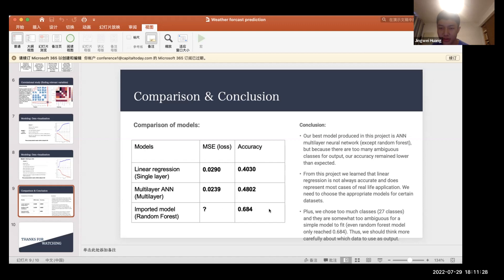In conclusion, our best model produced in this project is the artificial neural network, except the Random Forest one. Maybe because there are too many ambiguous classes for output, our accuracy remains just lower than we expected. Also from this project, we learned that linear regression is not always accurate and does not represent most cases of real-life application.